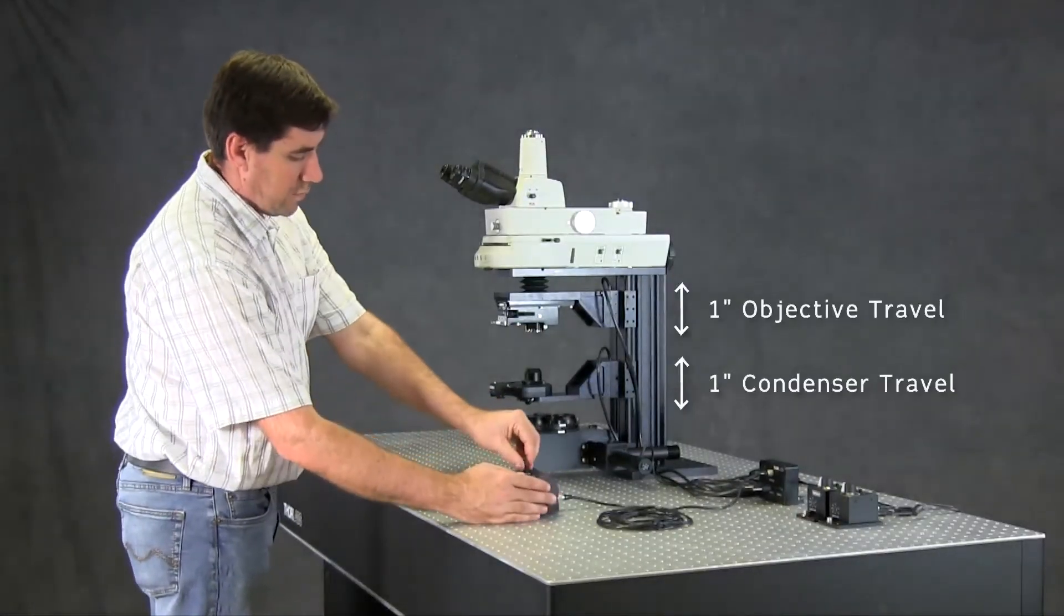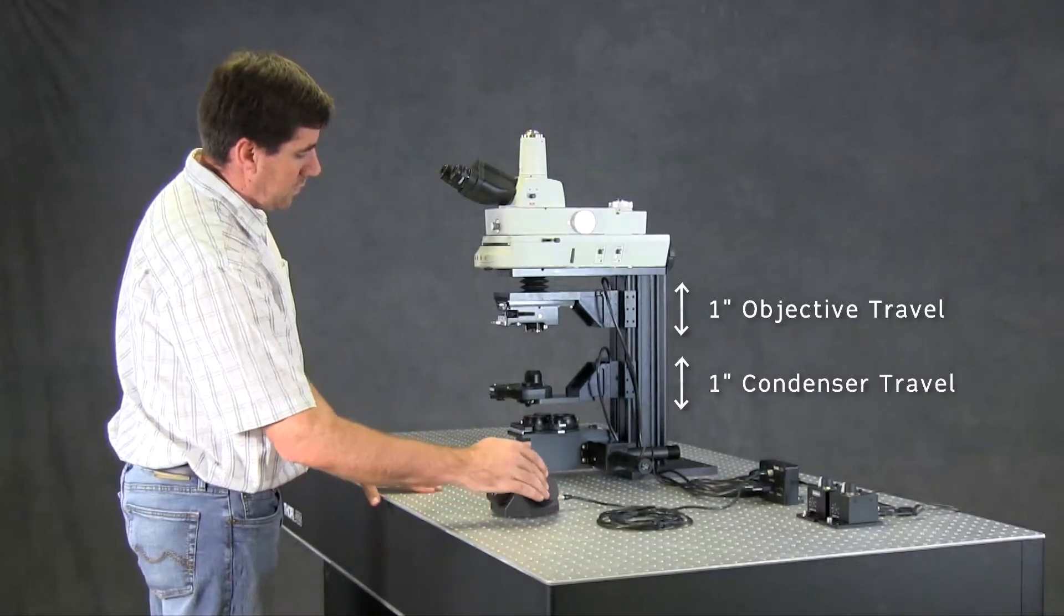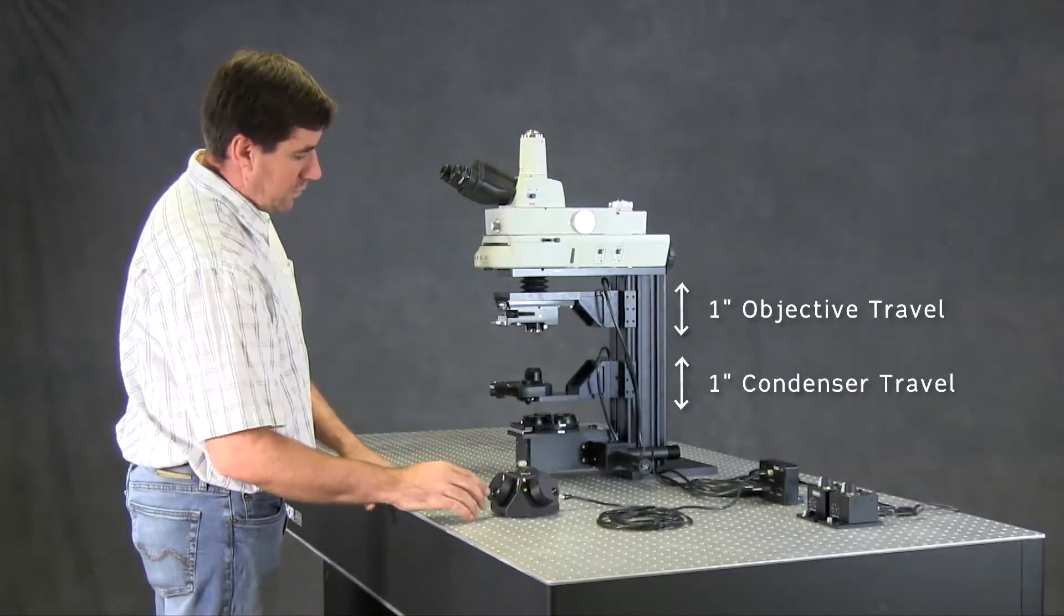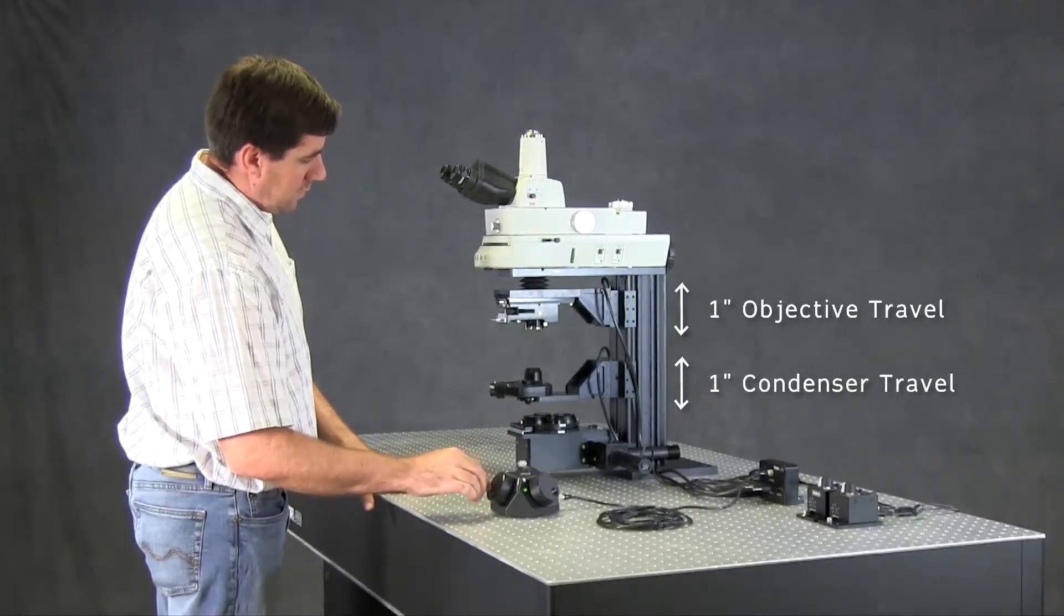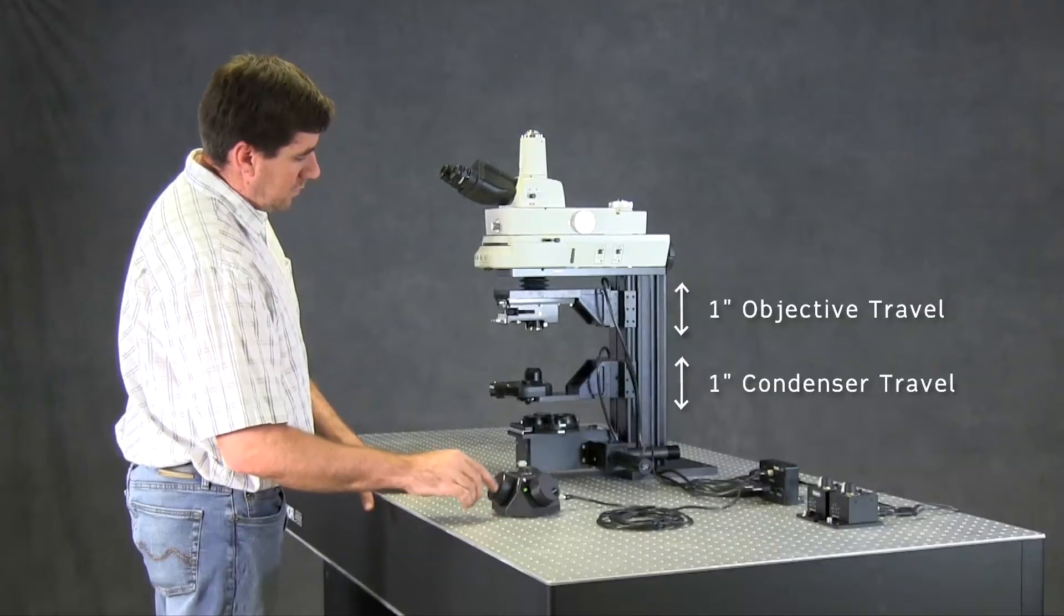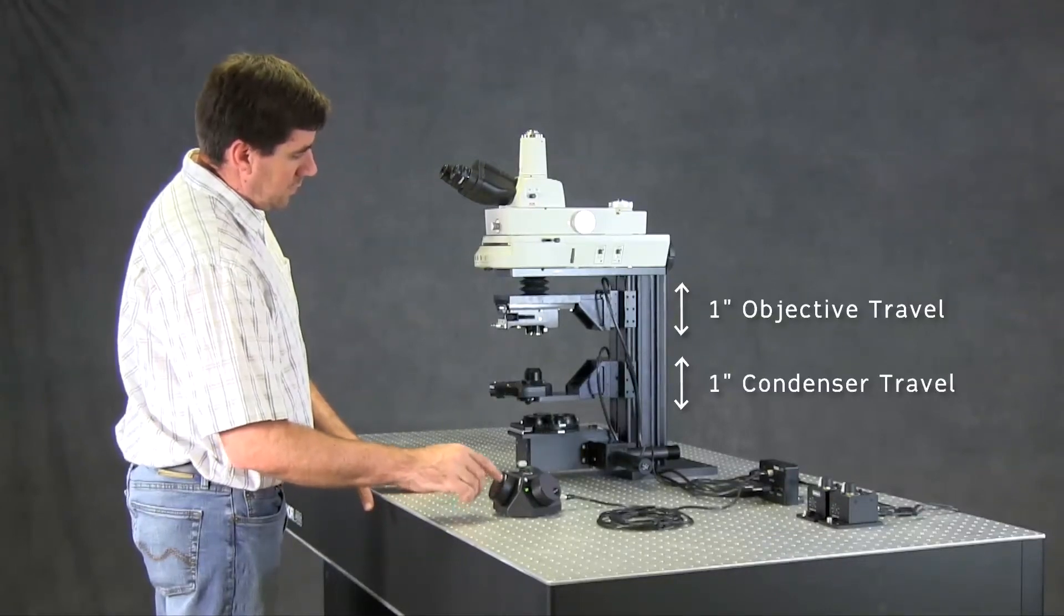The condenser and objective have one inch of fine motorized travel. The speed of the translation is user adjustable, supporting both slow, fine movements and fast, coarse movements.